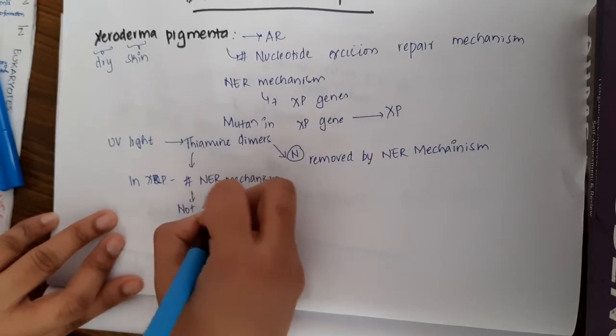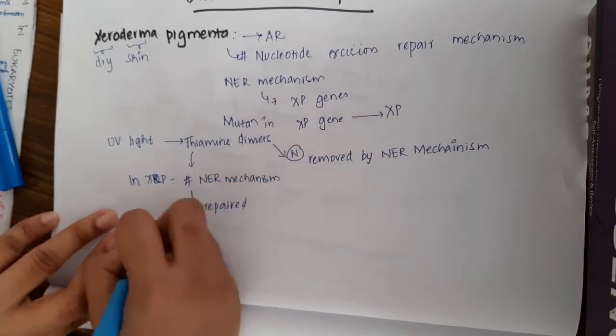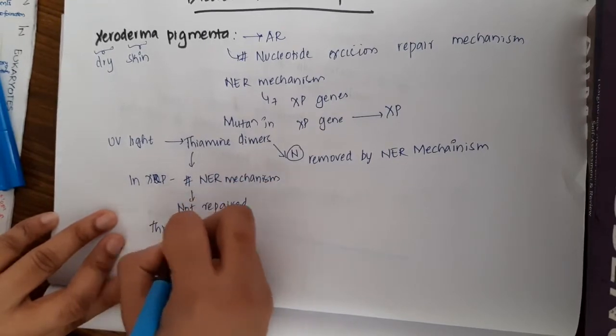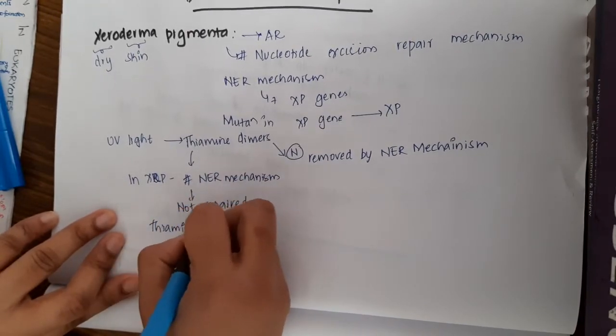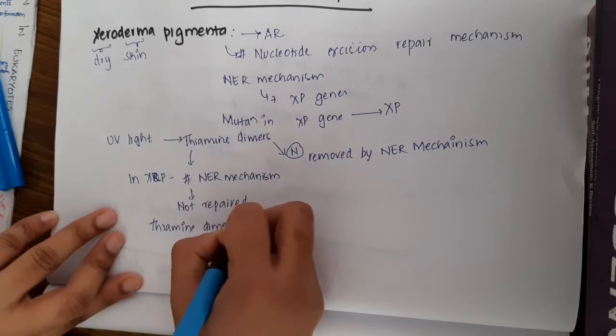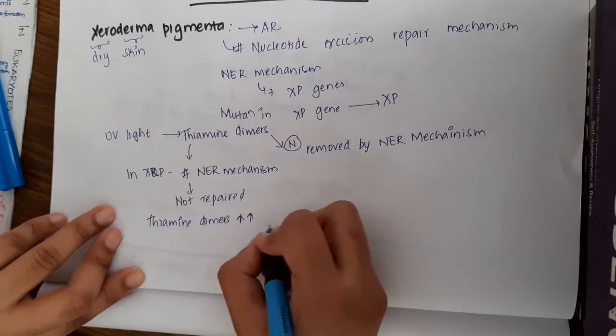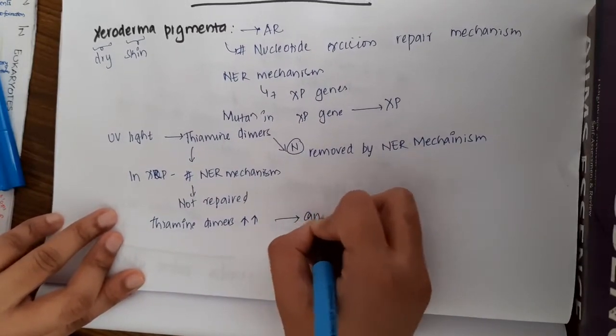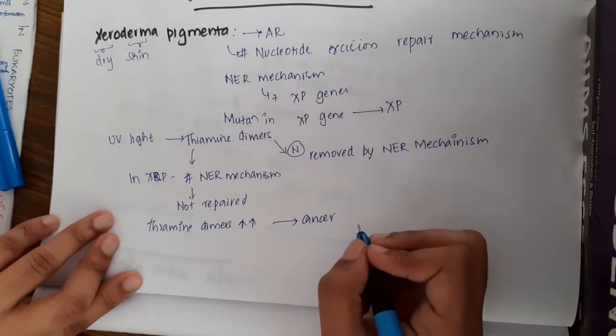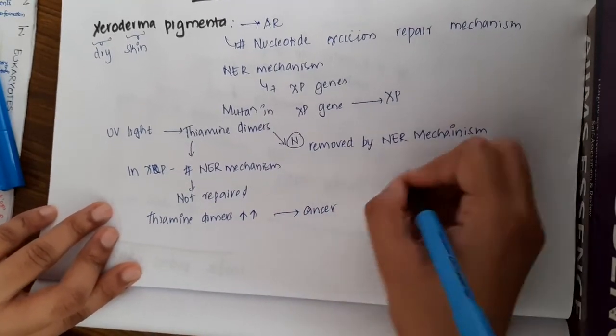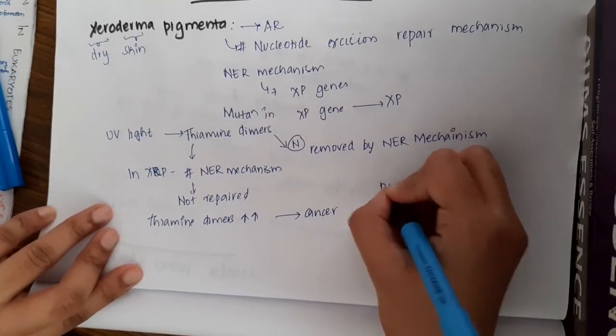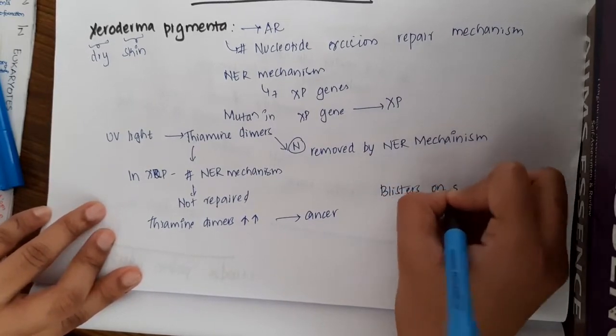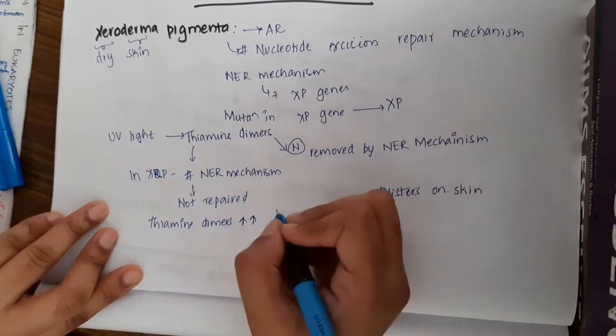As a result, these thymine dimers are accumulated, resulting in this disease. Whenever these thymine dimers are accumulated, this results in cancer. The skin is sensitive to UV light and they develop blisters on the skin.